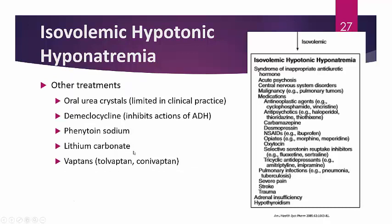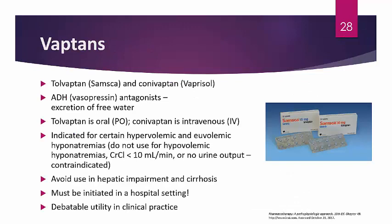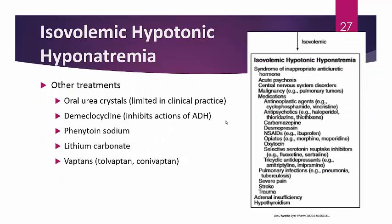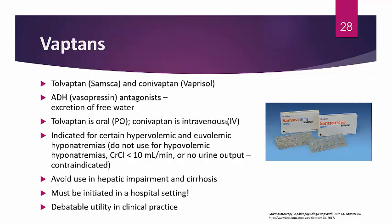The bolded treatments plus or minus a loop diuretic are preferred. Regarding vaptan agents — tolvaptan (Samsca) and conivaptan (Vaprisol): these act against ADH similar to demeclocycline, promoting excretion of free water. Tolvaptan is an oral agent; conivaptan is IV.